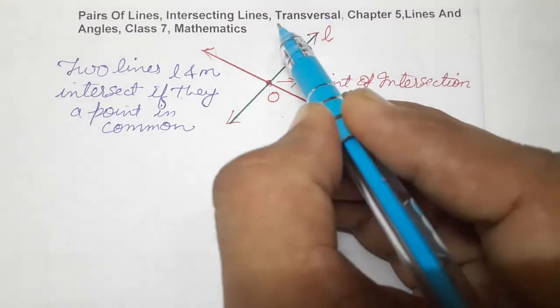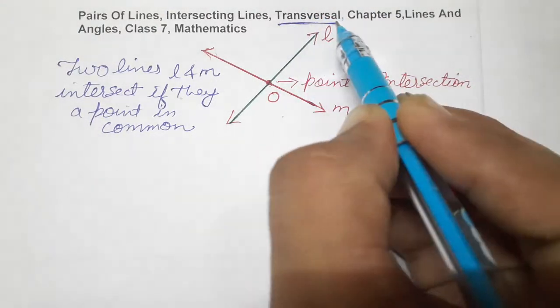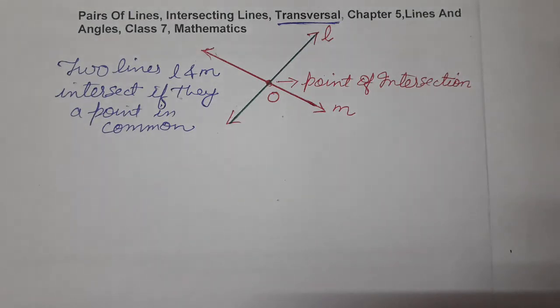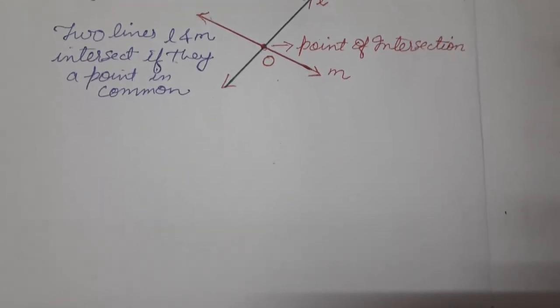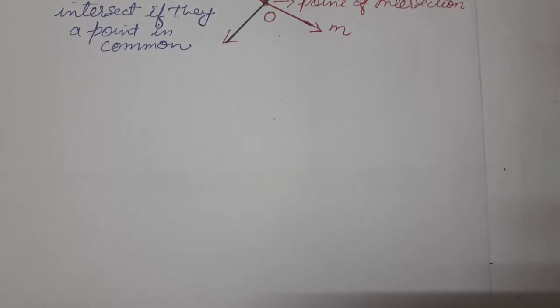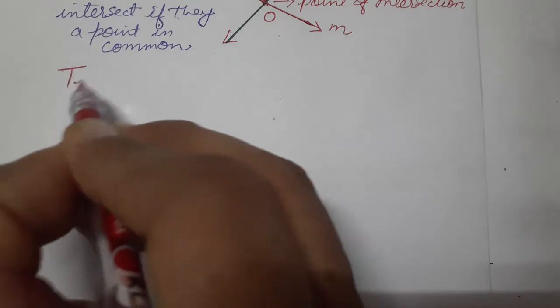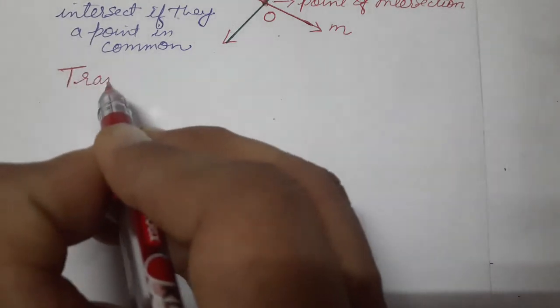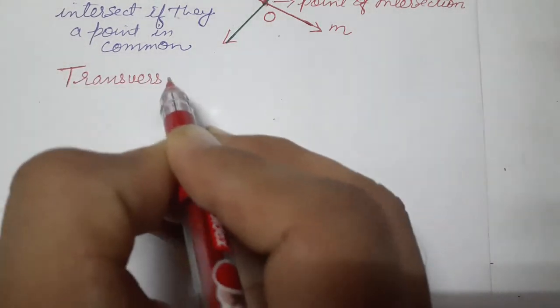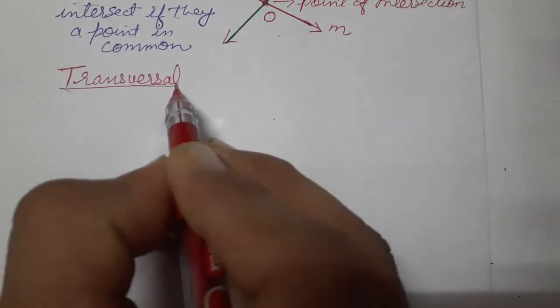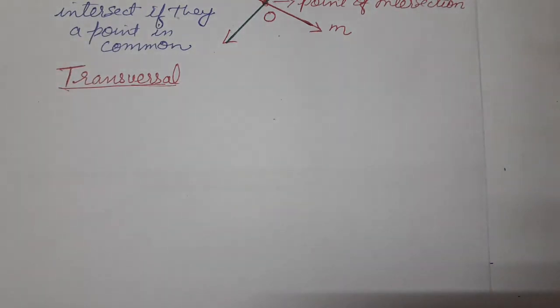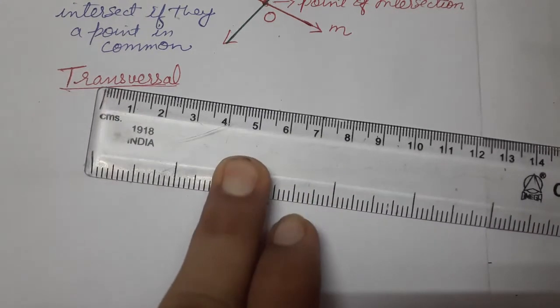Next one — transversal. This is a very important topic. A line that intersects two or more lines at distinct points is called a transversal. Let's write that down: a line that intersects two or more lines at distinct points.